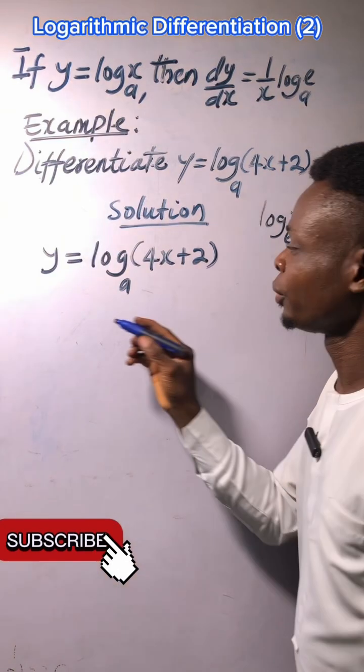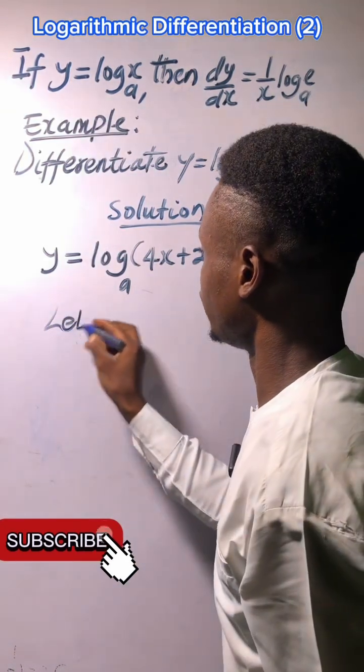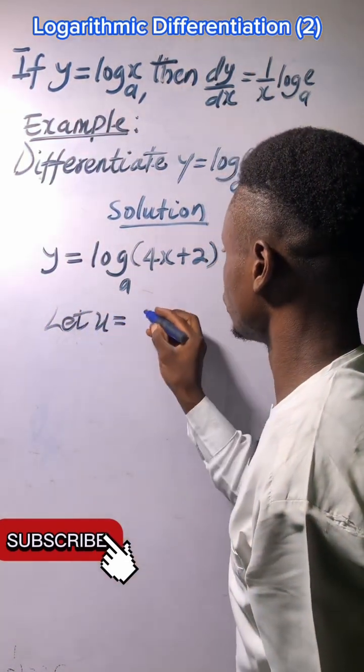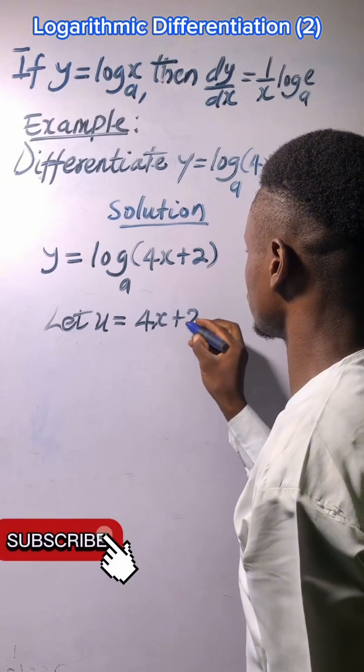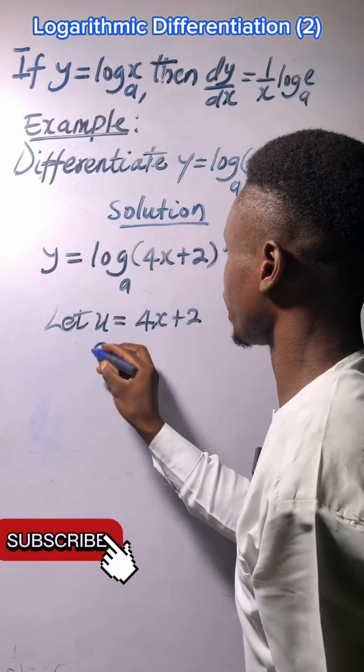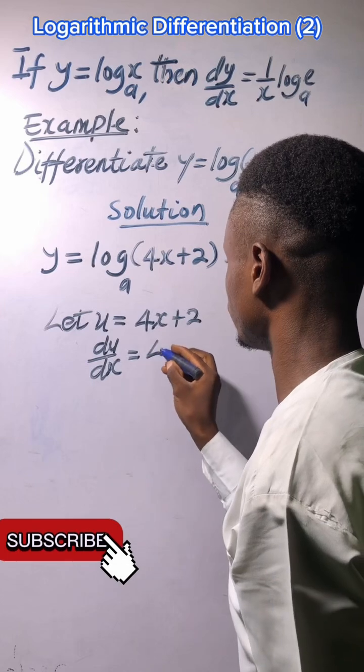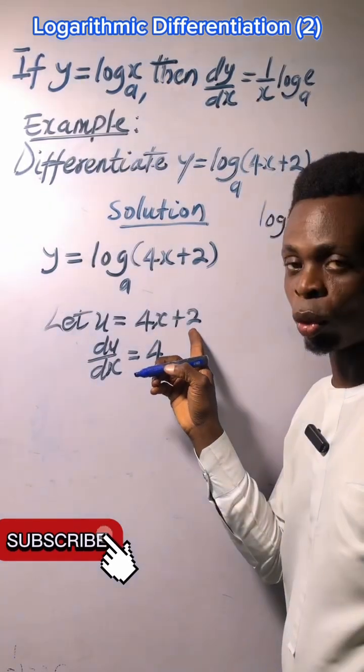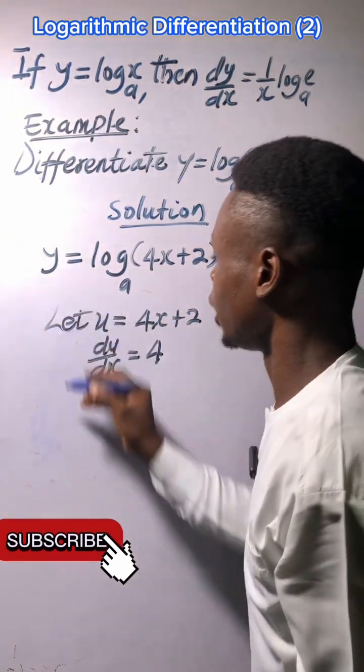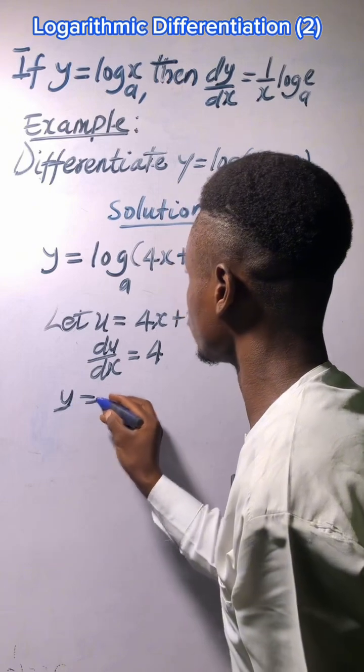Let u equal 4x + 2. Differentiating it, we have du/dx equal to 4, meanwhile 2 is a constant and that would be zero. Now we have y equal to log u.